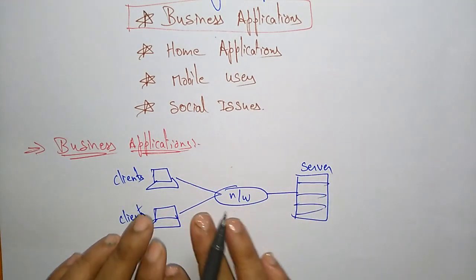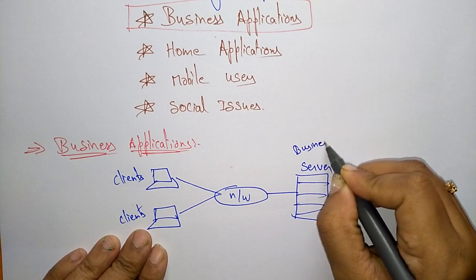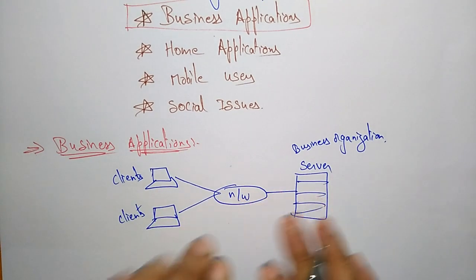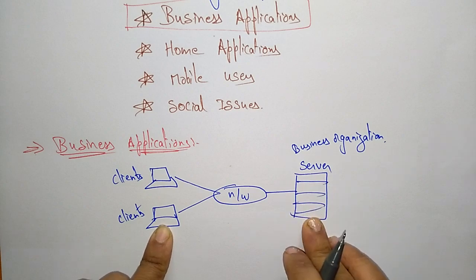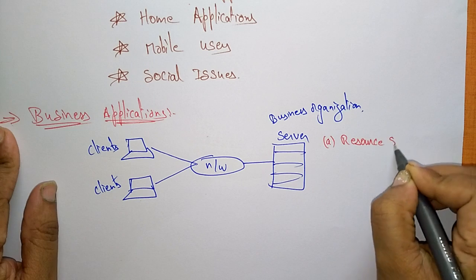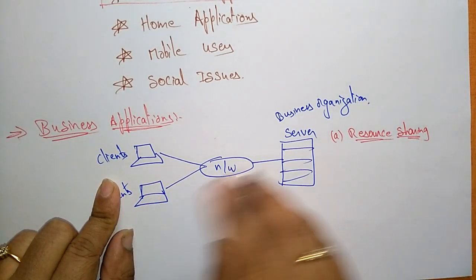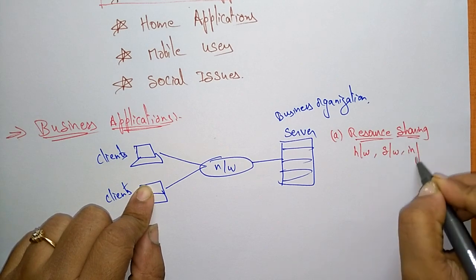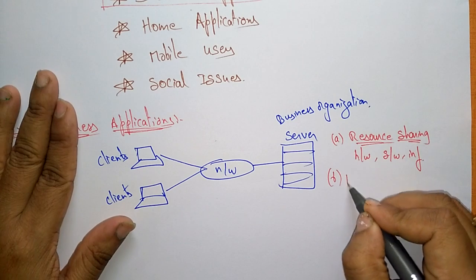The client and the server communicate only with the help of a network. The server is present in the business organization. The customer is interacting with the business organization server with the help of the network — a network with two clients and one server. In this business application, resource sharing is happening: we are sharing the hardware, software, and information — everything is shared here. In this business application, we are also providing communication media with the help of the network.